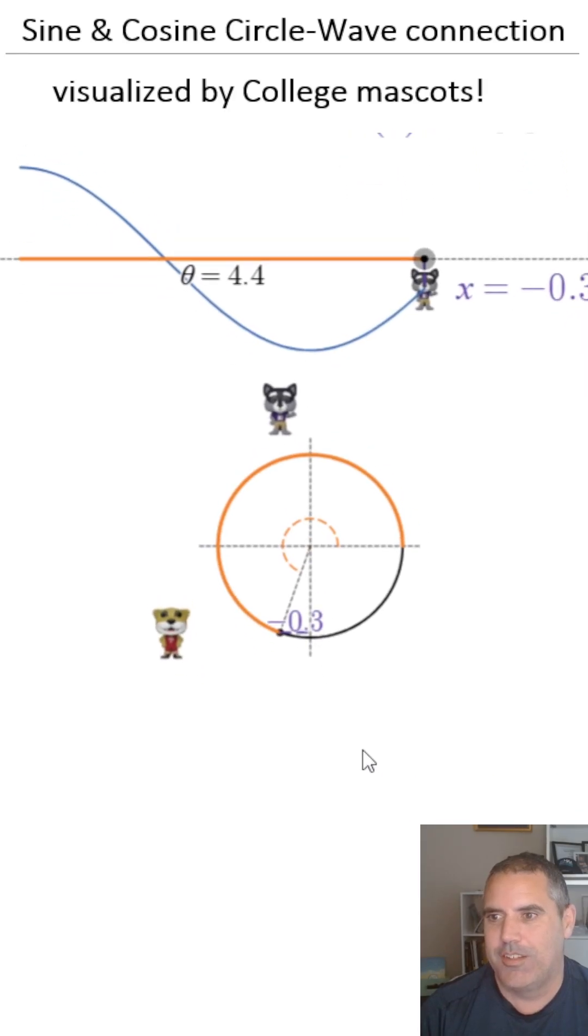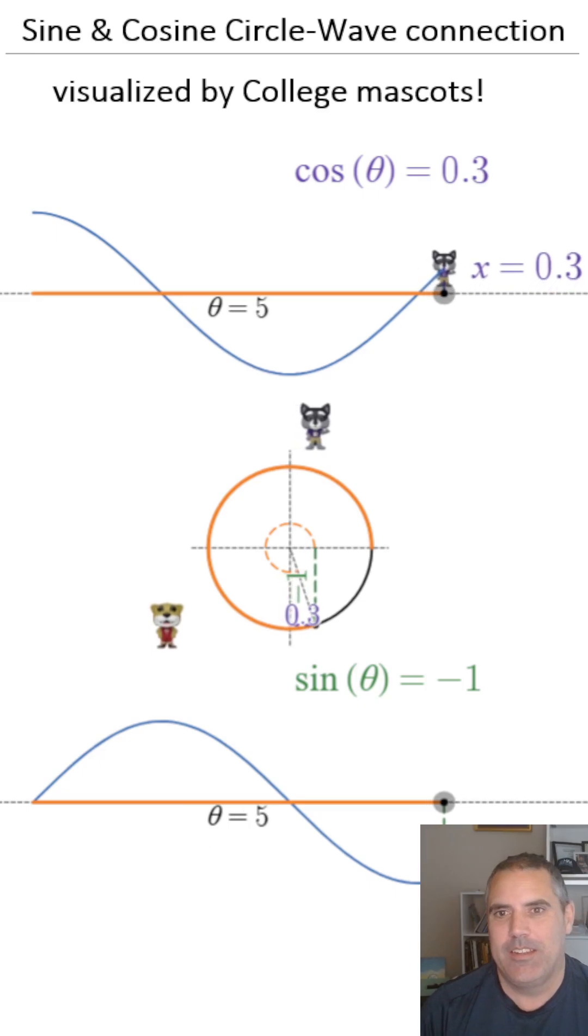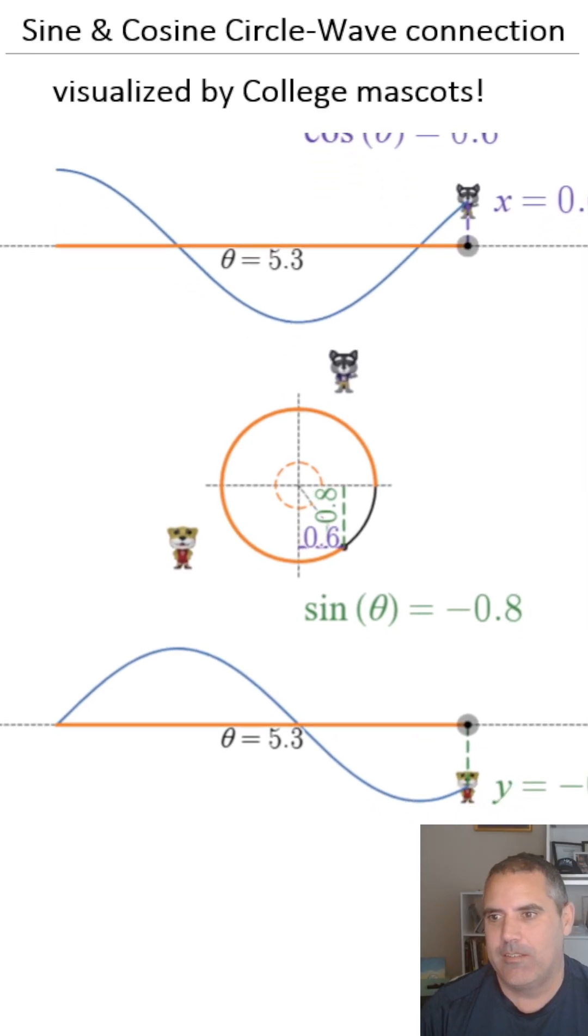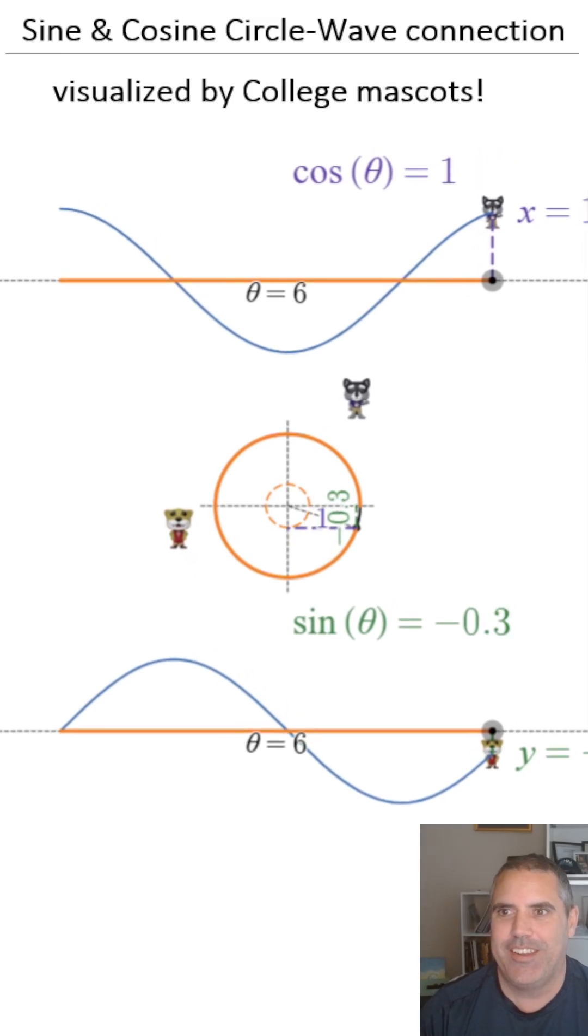Thank you, Butch and Harry. Let's let you both go. That's sine and cosine. Again, you can find many other visuals, but probably not very many that have Butch and Harry helping.